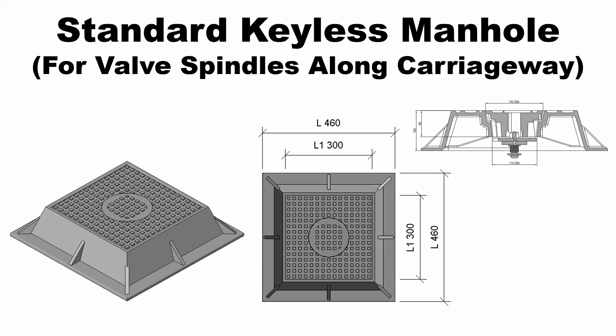Hello everyone. Today I would like to show you how to create a standard keyless manhole Revit family. In this video, I will create four parts of the family: main body, pattern block, pattern, and void, and then load and combine them into the main family.